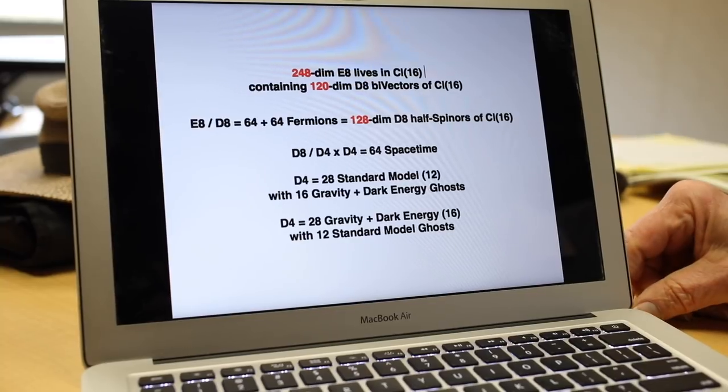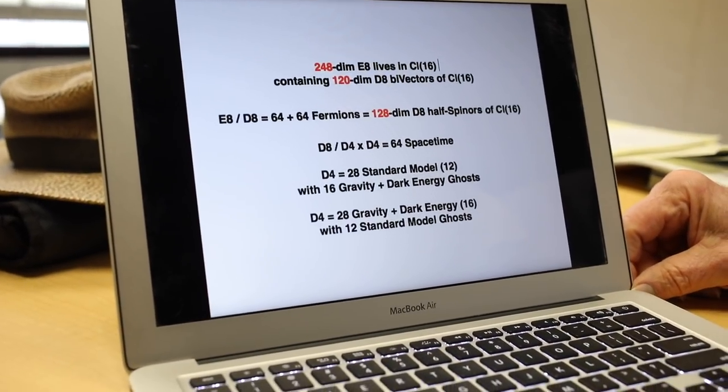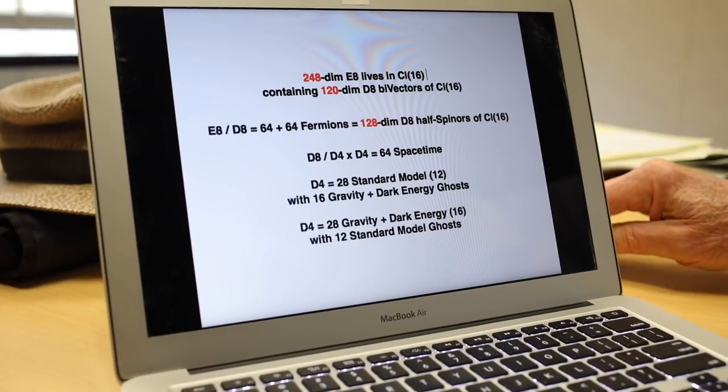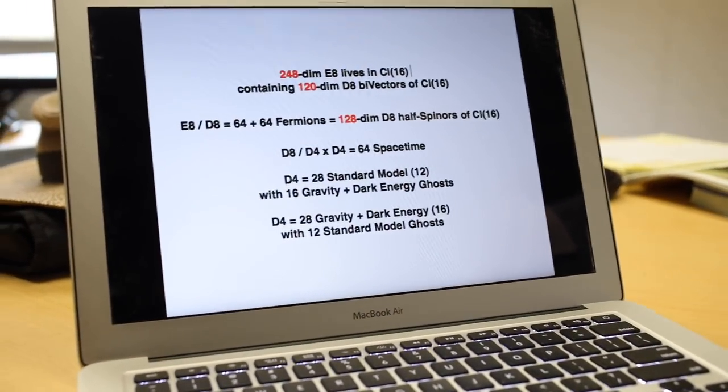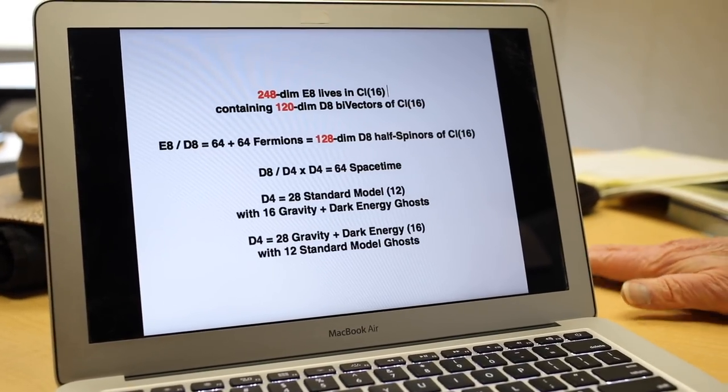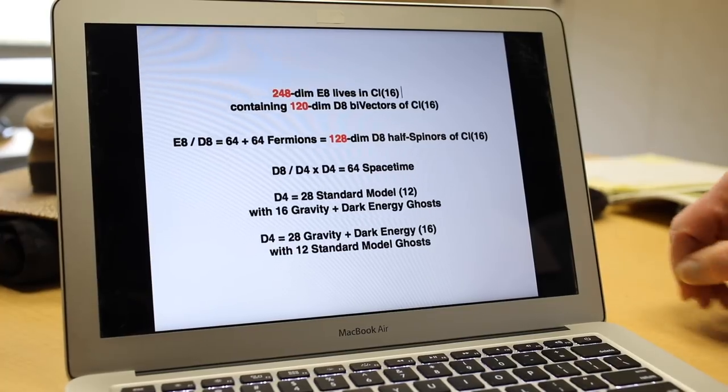I have 248-dimensional E8. It contains 120-dimensional bi-vectors and 128-dimensional half spinors. The D8 contains two D4s and a 64-dimensional space-time compound space-time. There's eight position vectors times eight momentum vectors. The 64-dimensional space-time thing in D8 represents an eight-dimensional space-time. One of the D4s has the 12 standard model gauge bosons and 16 ghosts for gravity and dark energy.